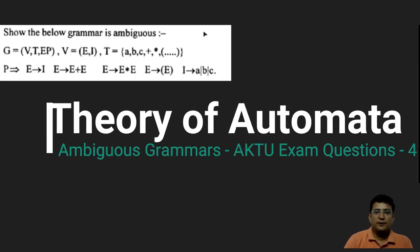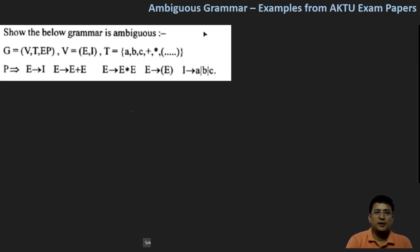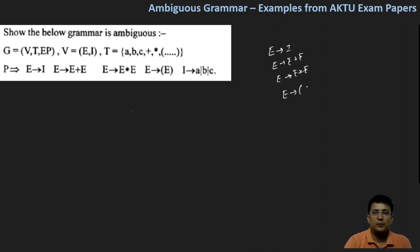Hello everyone. We have been given a grammar and we have to prove whether this grammar is ambiguous or not. So we write the productions here. E produces I, and then E produces E plus E. E produces E multiplied with E, then E produces opening bracket E closing bracket, and I produces A or B or C.